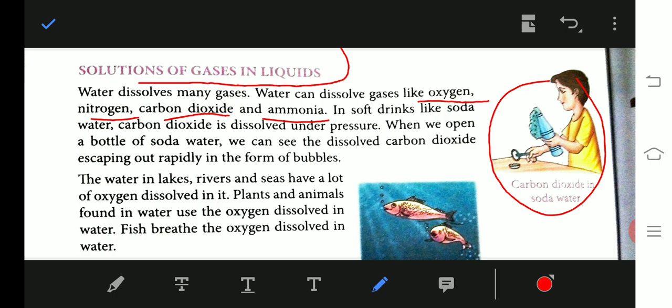The water in the lake, river, and sea has a lot of oxygen dissolved in it. So the plants and animals found in water use the oxygen dissolved in water. Fish breathe the oxygen dissolved in water.